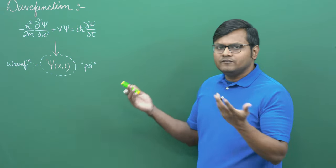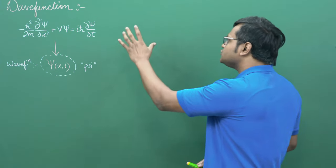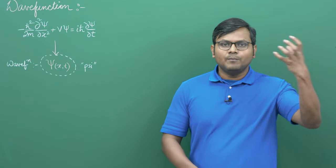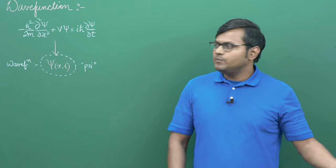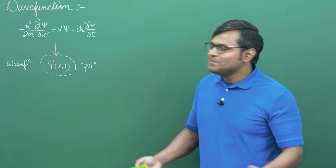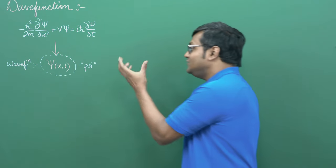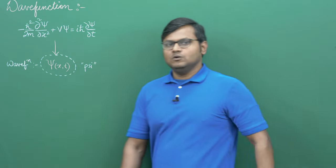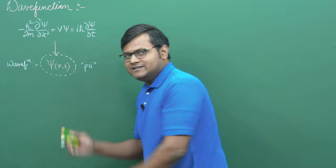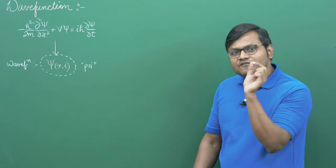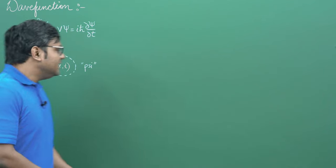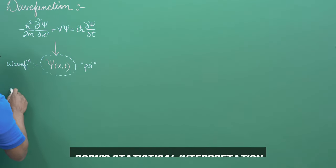Although the wave function has no physical quantity associated with it, it does contain information about the particle. The whole point of solving the Schrödinger's equation is to obtain information about the system — how the particle behaves in the presence of some potential. So we have to perform some mathematical operations on it to extract that information. The first such operation was given by the Born's statistical interpretation, explained in the previous lecture.